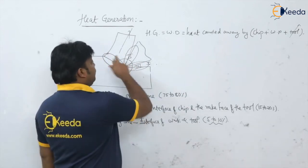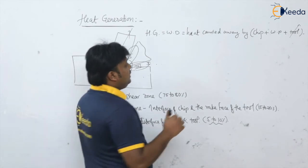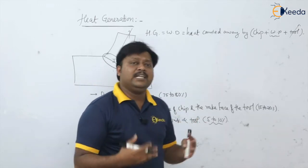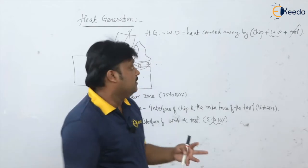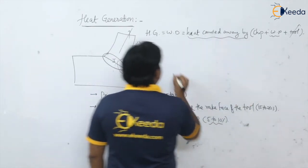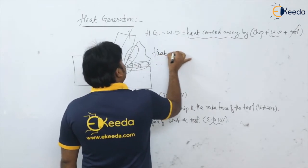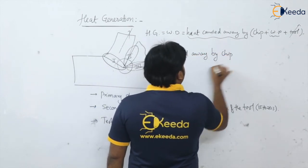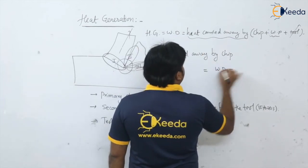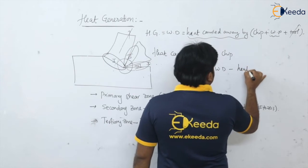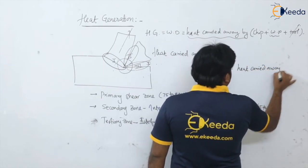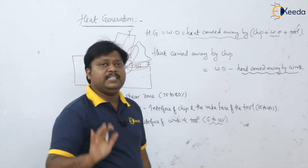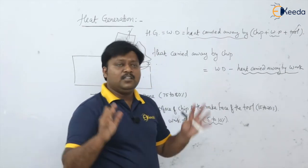The maximum heat is carried away by the chip — around 75 to 80 percent of heat is carried away by the chip. Heat carried away by the workpiece is around 10 to 15 percent. We can express the heat carried by each component as a fraction of the total work done.